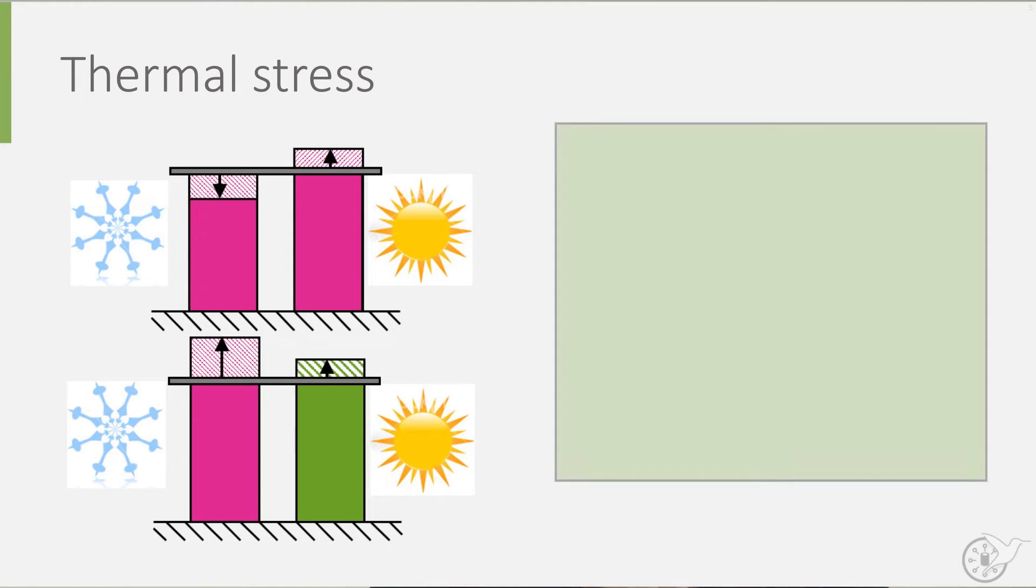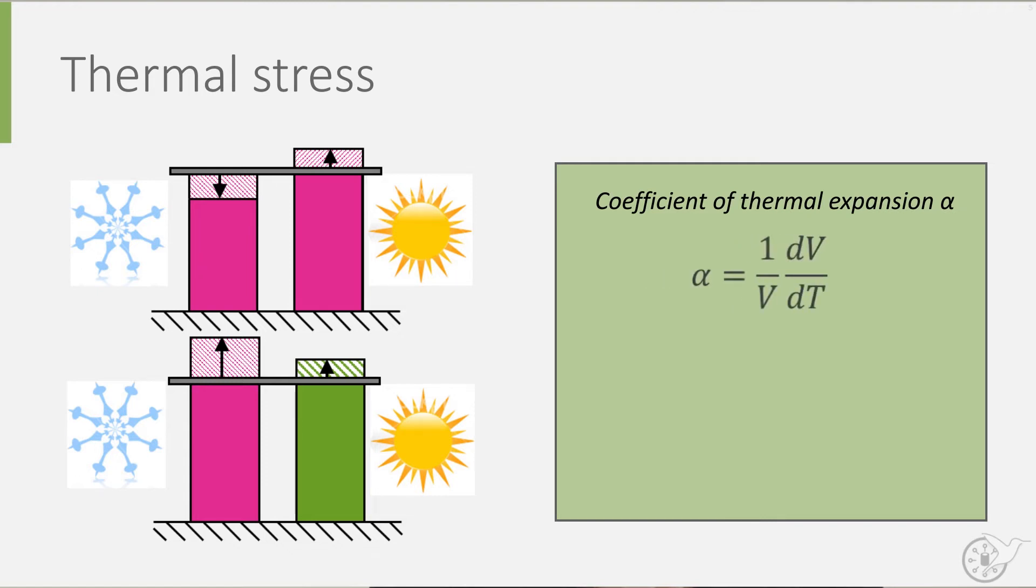The relation between the temperature and the volume is described by the thermal expansion coefficient denoted by the lower-case Greek letter alpha. It is equal to 1 over the volume V times the change in volume with the temperature dV over dT.